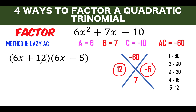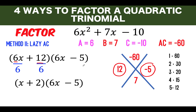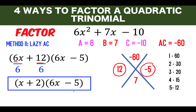Since 6 times 6 does not equal the original 6x², we find any common factor in each resulting binomial factor. Between 6 and 12 there is a common factor of 6, so divide both by 6: 6x ÷ 6 = x and 12 ÷ 6 = 2. The second factor has no common factor, so just copy it. This gives (x + 2)(6x − 5) — the final answer. This is called the lazy method because we skip factoring by grouping.